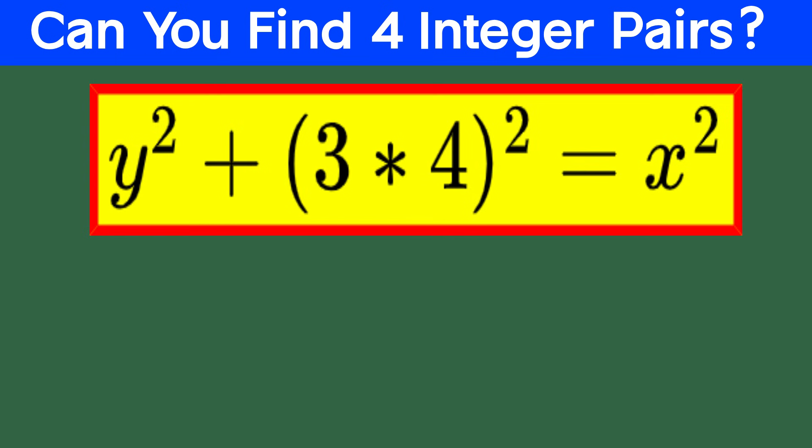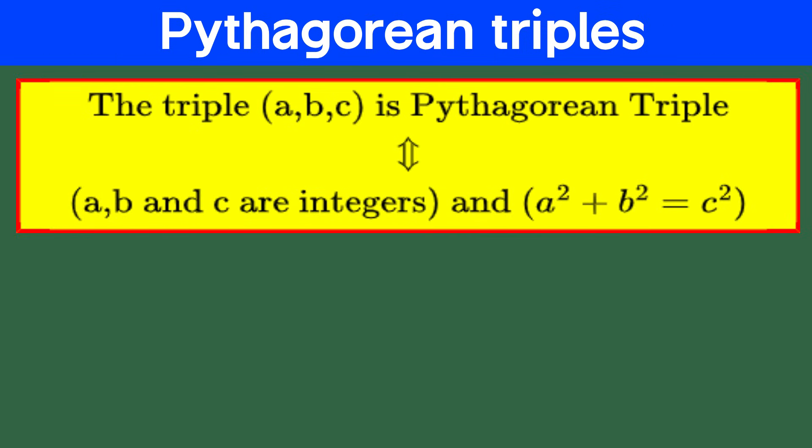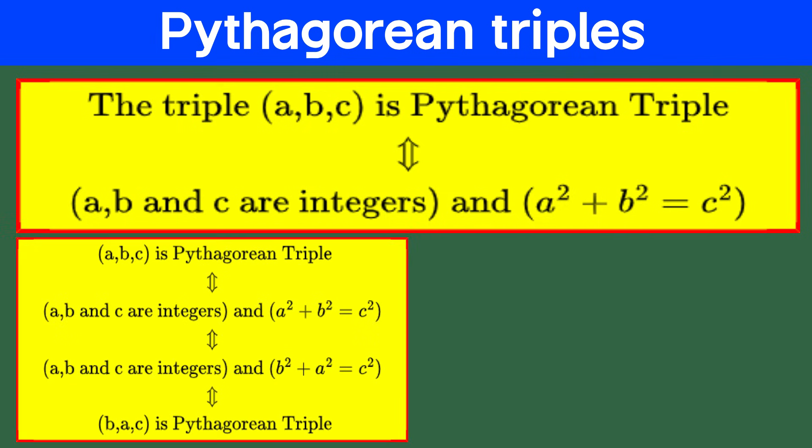Now, buckle up for a journey into the world of Pythagorean triples, a hidden gem of math that's both simple and fascinating. A Pythagorean triple is a set of three positive integers, let's call them a, b, and c, that satisfy the iconic Pythagorean theorem, a squared plus b squared equal to c squared. This equation is the holy grail of right triangles, the secret sauce behind so many geometric wonders. Here's the cool part, if a, b, and c are Pythagorean triple, then a squared plus b squared equal to c squared, then swapping the terms in left side will give b squared plus a squared equal to c squared, which means that b, a, and c is also Pythagorean triple.